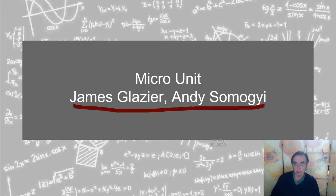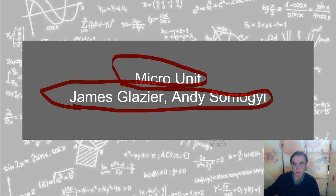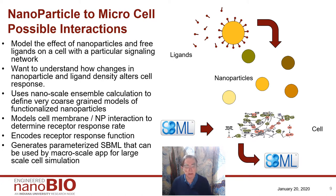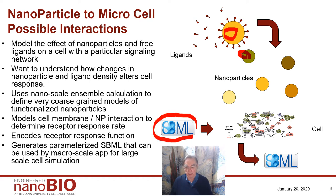Now we come to the micro unit, which sits between nano and cellular — it goes into the cellular and points back down into the nano. Led by James Glaser and Andy Simoji, this slide describes an essential process for the nano bio activity. We have a nanoparticle with ligands that are presented by the nanoparticle to the cell. The ligands functionalize the nanoparticle because they invoke functions in the cell and bind to the cell surface in various fashions. We capture this with SBML, Systems Biology Markup Language, which allows us to take detailed simulations and abstract them for larger scale simulations.